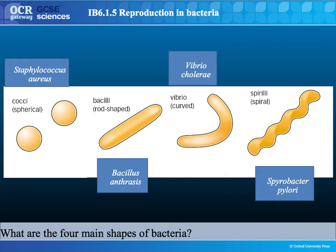Another shape of bacteria is a curved shape that looks like a boomerang, and this is Vibrio. An example is Vibrio cholerae, which causes the digestive disease cholera, transmitted through contaminated water. The last shape is a spiral shape called spiruline, and the bacteria that cause syphilis and stomach ulcers have this shape.